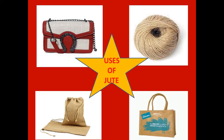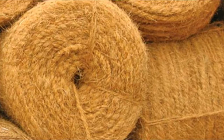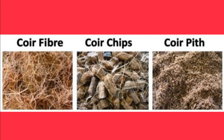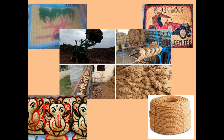The third natural fiber is coir. Coir is the brown, thread-like structure found in the outer covering of coconuts. It is separated from the coconut. Coconuts grow in fertile soil, especially red and yellow soil, generally near coastal regions. From coir we can make many products such as ropes, foot mats, mattresses, and previously ropes were also made from coir.